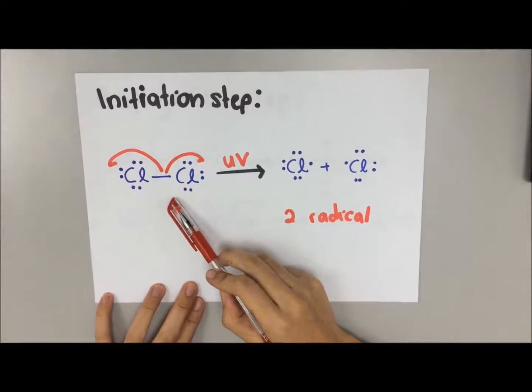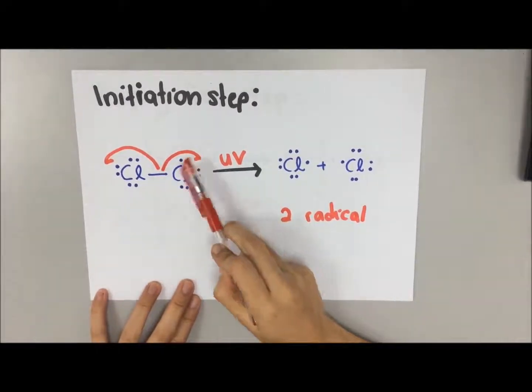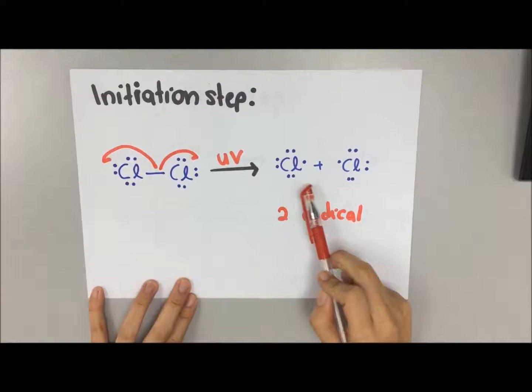First of all, the initiation step only involves your halogen, which is your chlorine gas. From here, chlorine gas will break the bond to form a free radical.